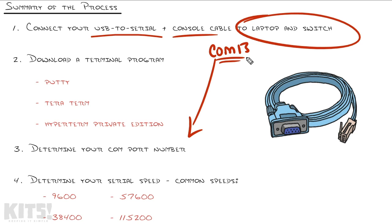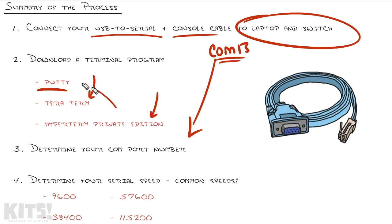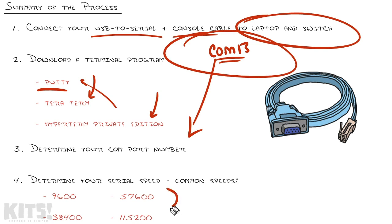Then you download a terminal program. I really pushed you toward PuTTY, but there are others like TeraTerm — I actually used TeraTerm before I knew PuTTY existed — and HyperTerm. The guy who wrote HyperTerm doesn't actually belong to Microsoft; Microsoft just licensed it from him. He created HyperTerminal Private Edition, which still isn't as good as PuTTY. From there, you open a serial connection, type in the new COM port — mine was COM13 — and select the speed.